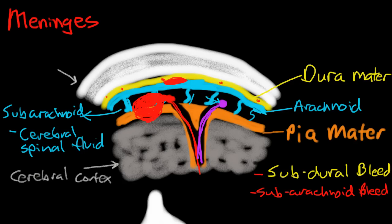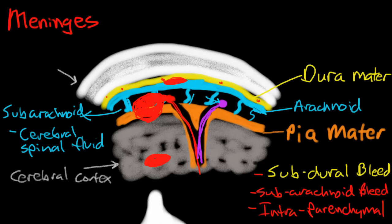The other type of bleeding you can have is an intraparenchymal bleed, where you actually get bleeding within the brain itself. That is called an intraparenchymal bleed. So that should orient you to the three layers of meninges — the pia mater, the arachnoid, and the dura mater — surrounding the brain.